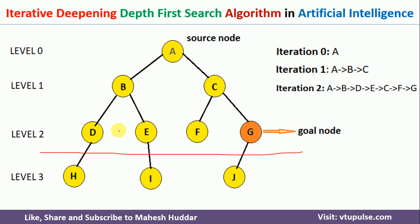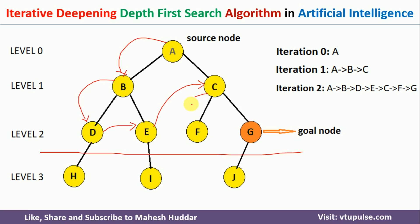We search up to level 2. Starting at A, we go to B, then from B to D. From D we do not go to H because we have already reached the level limit. We go back to E, and from E we do not go to I; we come back to C. The traversal path is: A to B, B to D, D to E, E to C, C to F, and F to G. We have now reached the goal node, so that is the final path.